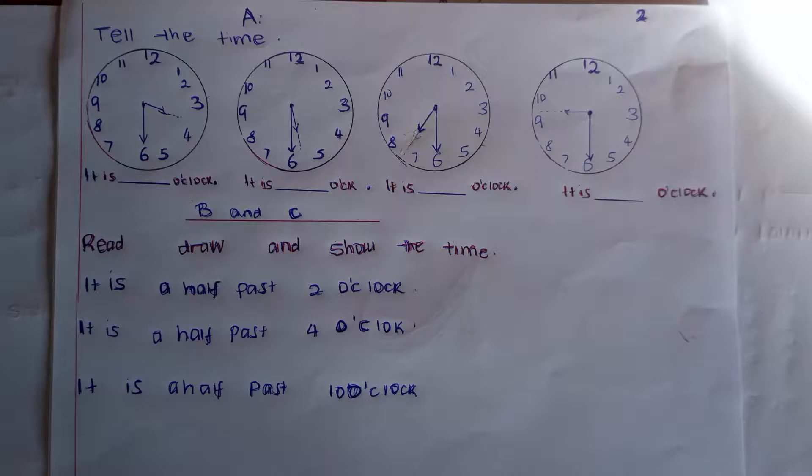B and C, where are we? Read, draw and show the time. It is half past 2 o'clock. It is half past 4 o'clock. It is half past 10 o'clock.